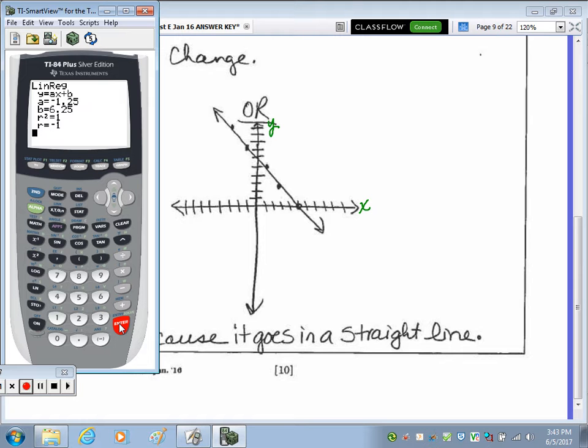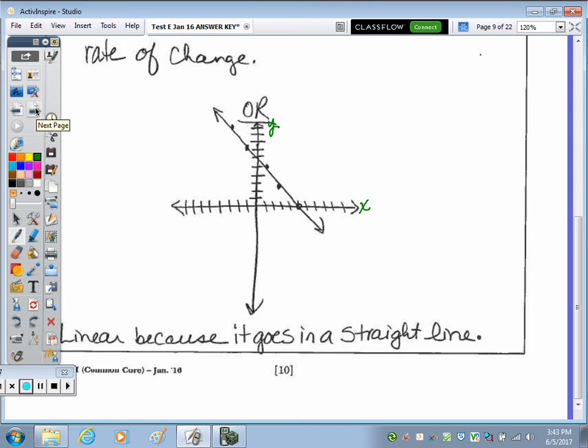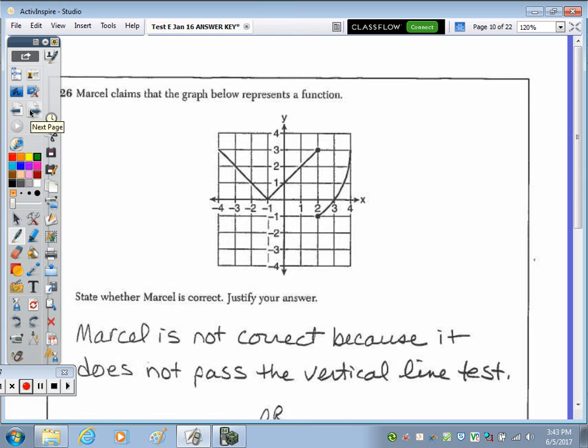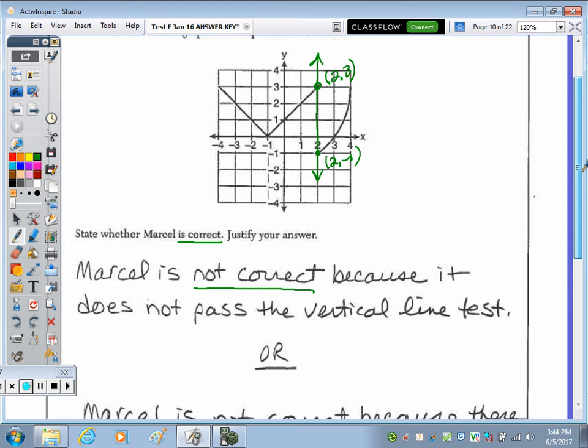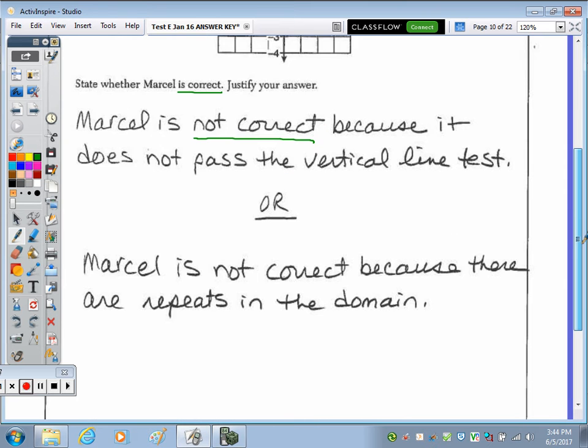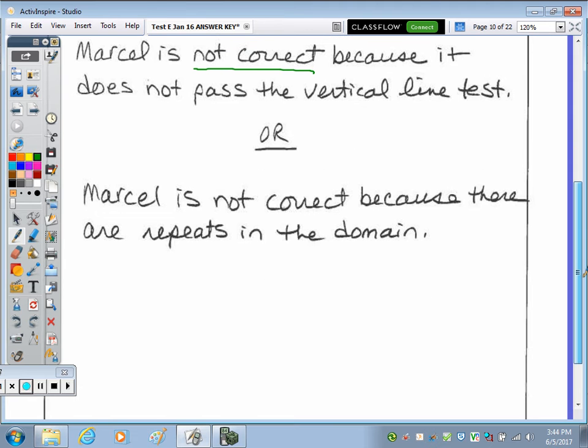Number 26. Marcel claims that the graph below represents a function. Because when we draw a vertical line here, the vertical line crosses the graph in two spots at the point (2, 3) and (2, -1), it is not a function. So you can state, first you want to answer, is he correct? You can say no, he is not correct. You can state that he is not correct because it does not pass the vertical line test, or you can say Marcel is not correct because there are repeats in the domain. We can't have any X values repeating.